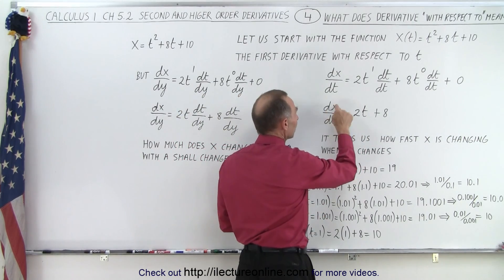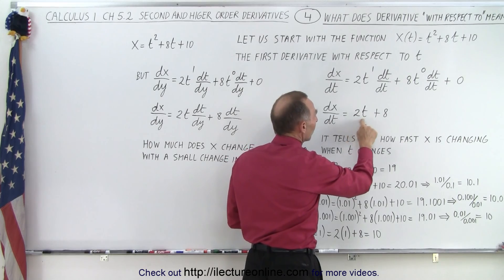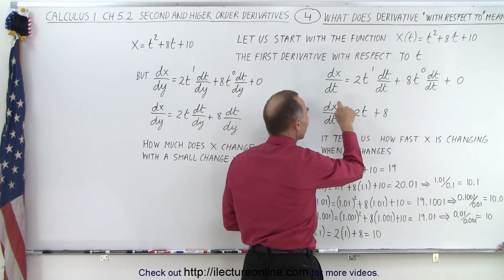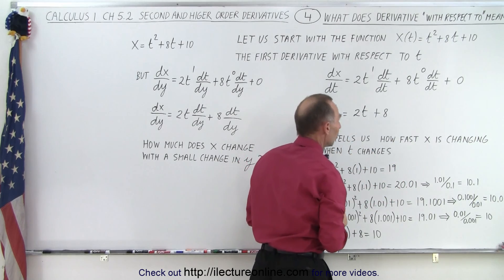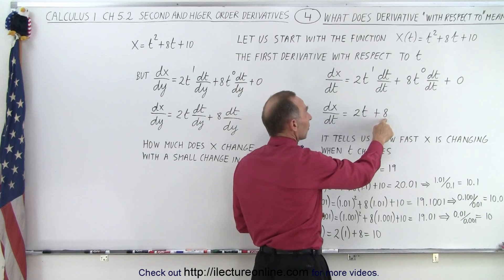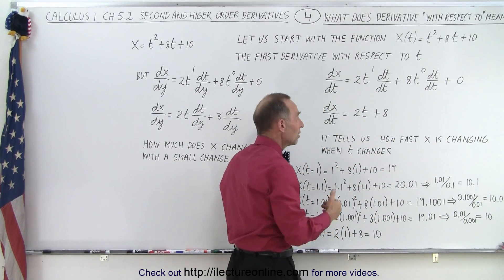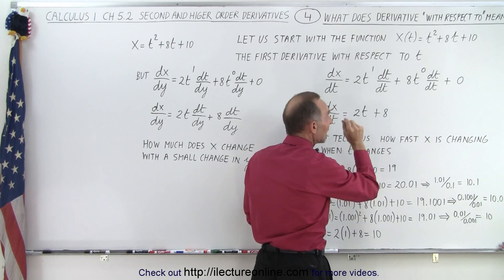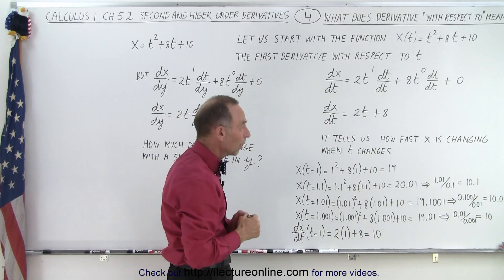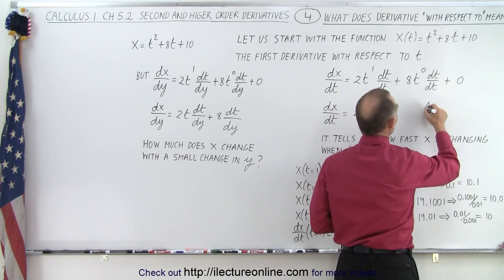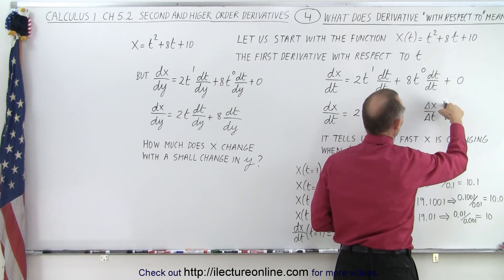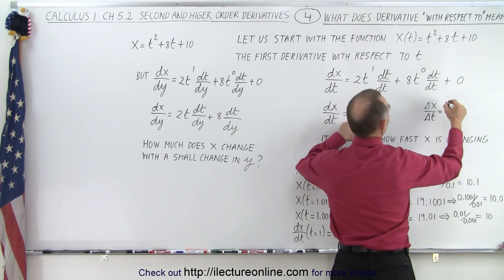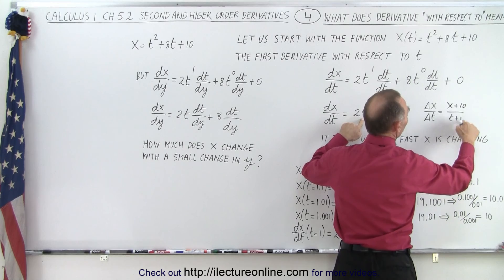This is the result of taking the derivative of x with respect to t. It represents the slope of the function, or it tells us how fast the variable x is changing when t changes. When t equals 0, x changes by a factor of 8 for every change in t. When t equals 1, it's 2 times 1 plus 8 which is 10, so x changes by 10 when t changes by 1. This represents the ratio of the change in x divided by the change in t.